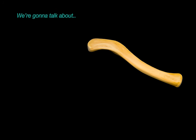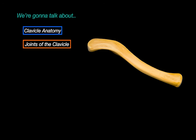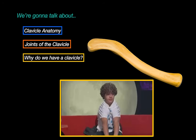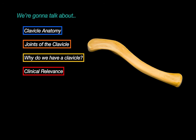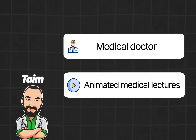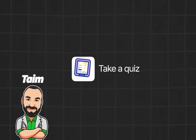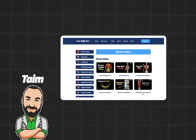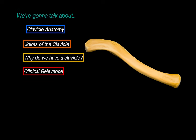In this video, we're going to keep it simple. We will talk about the clavicle's parts, surface, basically its anatomy. We're going to cover the joints it forms, and then ask a simple question: why do we even have a clavicle? Because what's fascinating is some people are actually born without one. And lastly, we will look at some clinical relevance, injuries, signs, and what to look out for when a patient walks in with clavicle pain. My name is Taim, I'm a medical doctor and I make animated medical lectures to make different topics in medicine visually easier to understand. Let's get started with clavicle anatomy.